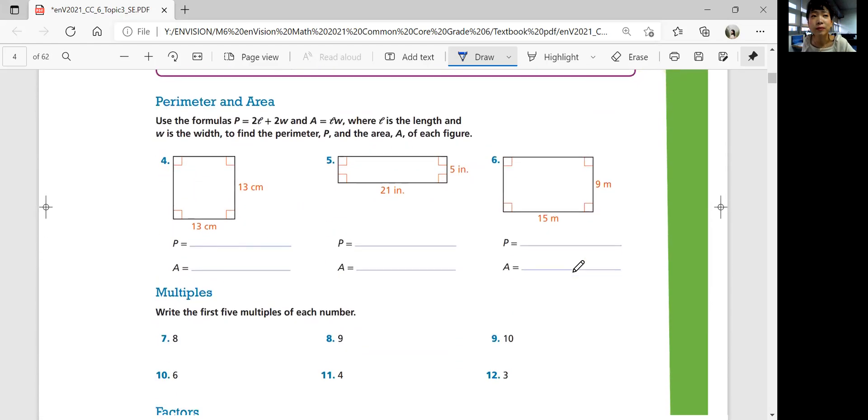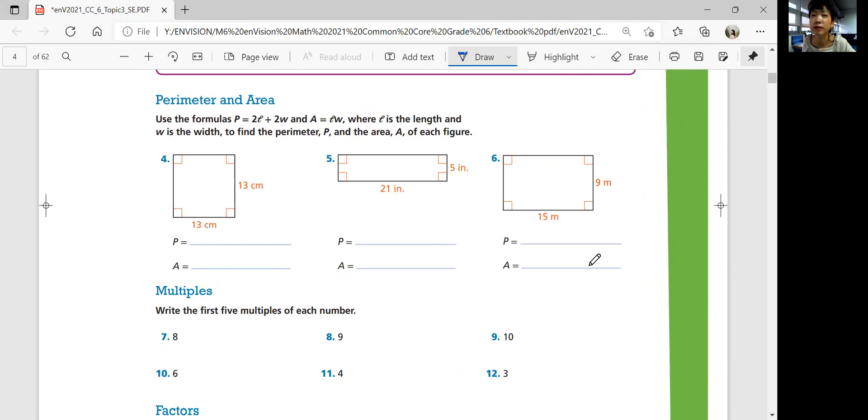We've got perimeter and area. Do you remember how to find perimeter and area for different shapes? We have a square for number four, rectangles in five and six. Perimeter is the length of all sides. Area is the area that's covered by the shape. For rectangles, you multiply side times side. You can do side squared for a square or length times width for a rectangle.